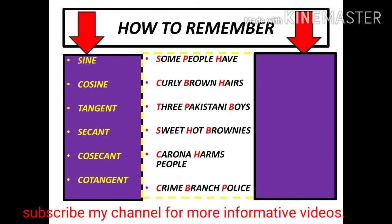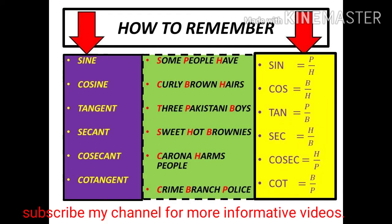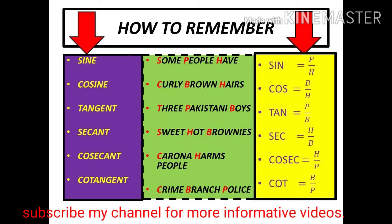For example, the first ratio is sine. Sine is equal to "Some People Have". S is for sine, P is for perpendicular, and H is for hypotenuse. So sine equals perpendicular upon hypotenuse.